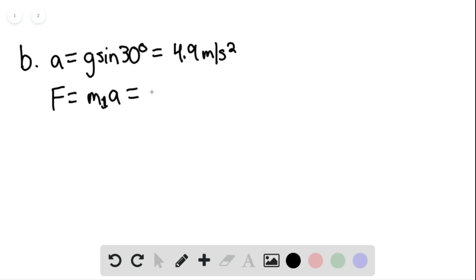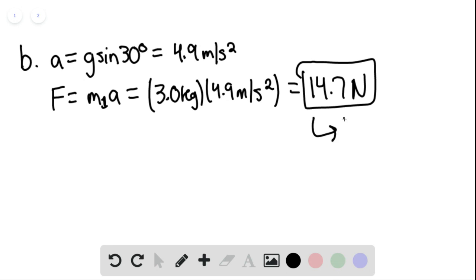given that the tension force has disappeared. So this would be 3.0 kilograms multiplied by 4.9 meters per second squared. And this is equaling 14.7 newtons. This would be essentially the critical F for the tension to disappear.